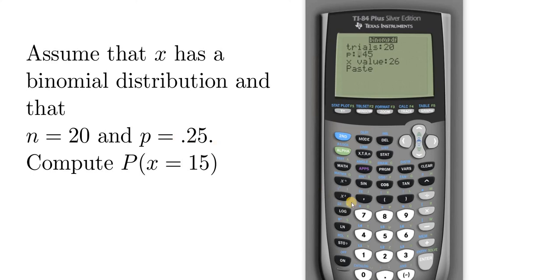P is the probability of success, so in this case it's .25. And the x value is 15, it's the number of successes. So we have 20 trials, probability of .25 of success, and we want the probability of exactly 15 successes.